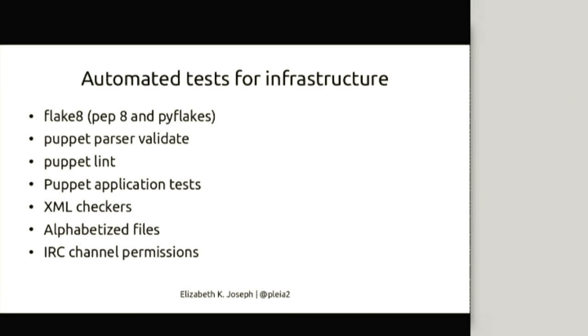Over the past year, we've also added some Puppet application tests. We're using Beaker RSpec to test our Puppet configs in a more comprehensive way, to make sure they actually run and do what we want. We've added a bunch of tests to our Puppet systems to check different functionalities with each change. We also check the syntax of several of our XML files. And we learned that humans are really bad at the alphabet, but computers are really good at it — so for several of our project files, we run alphabetization checks.